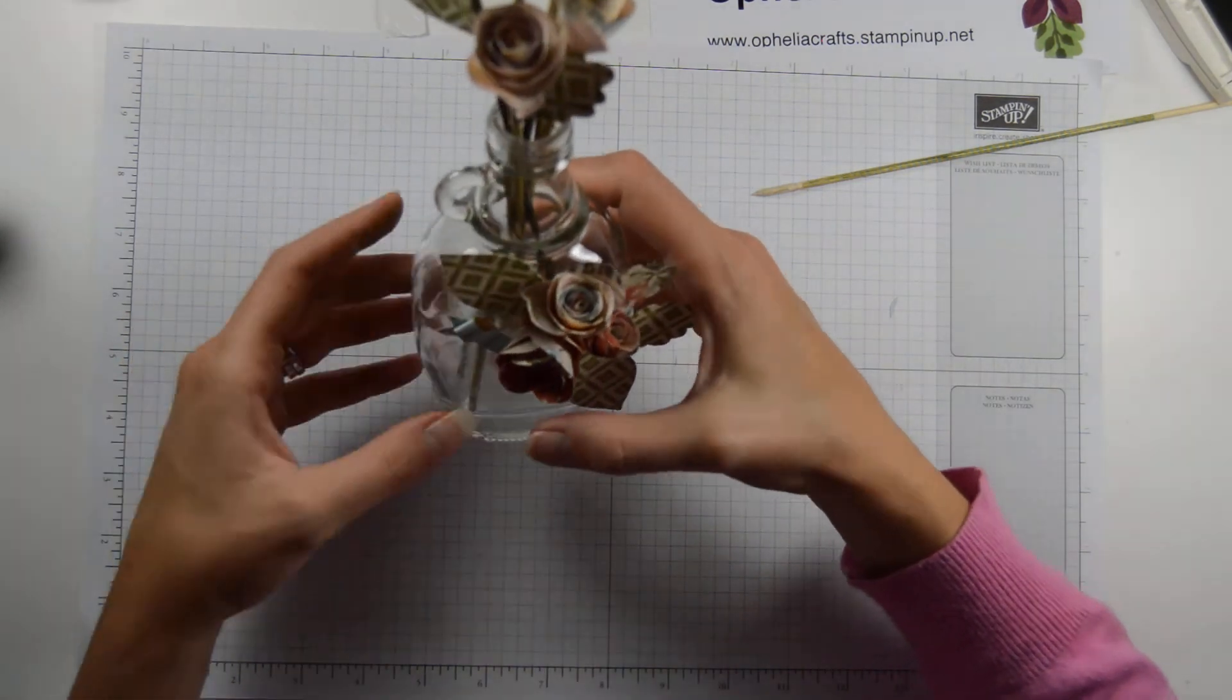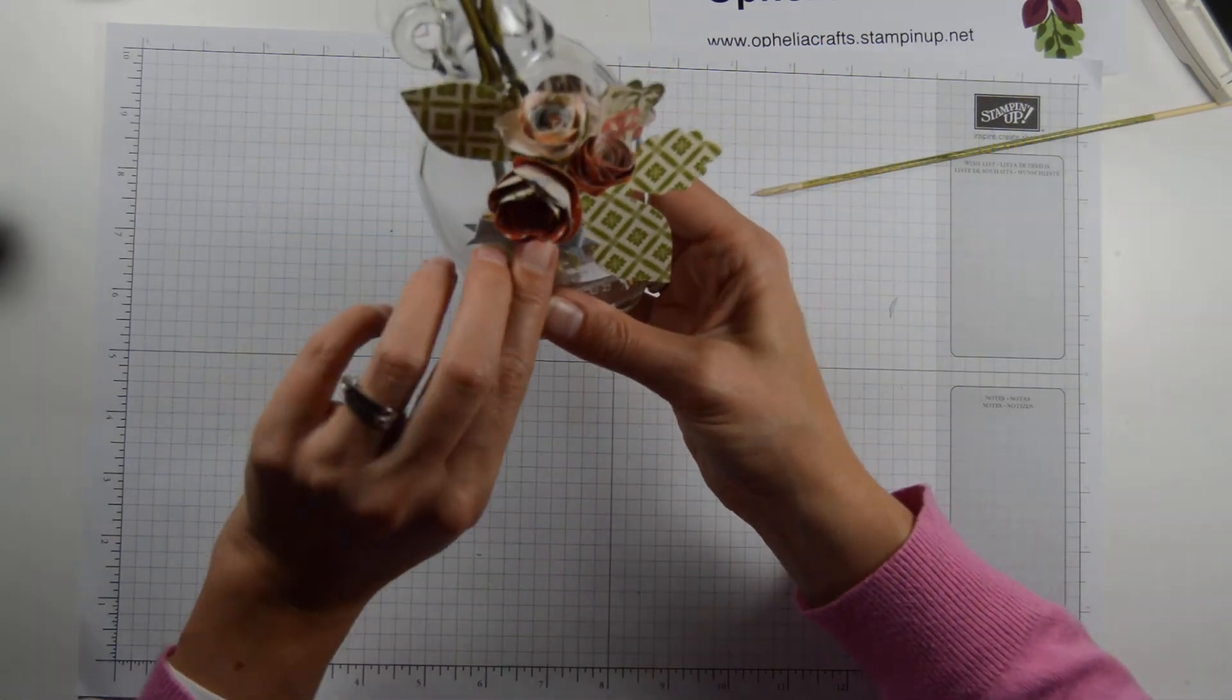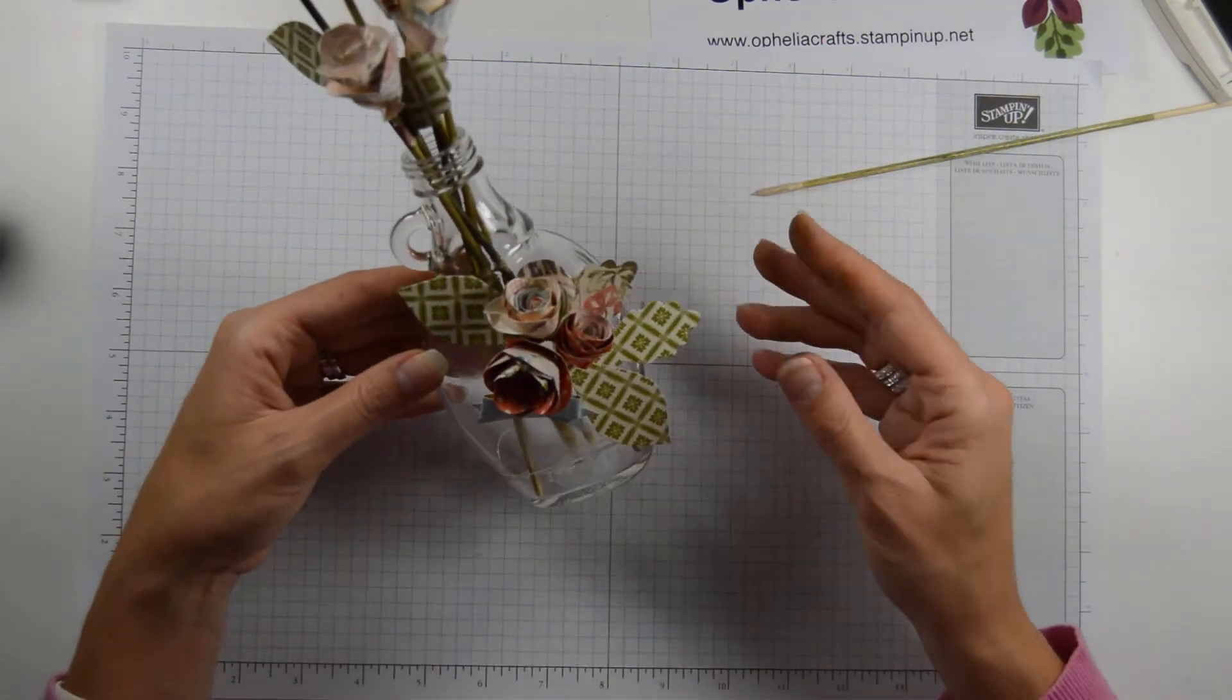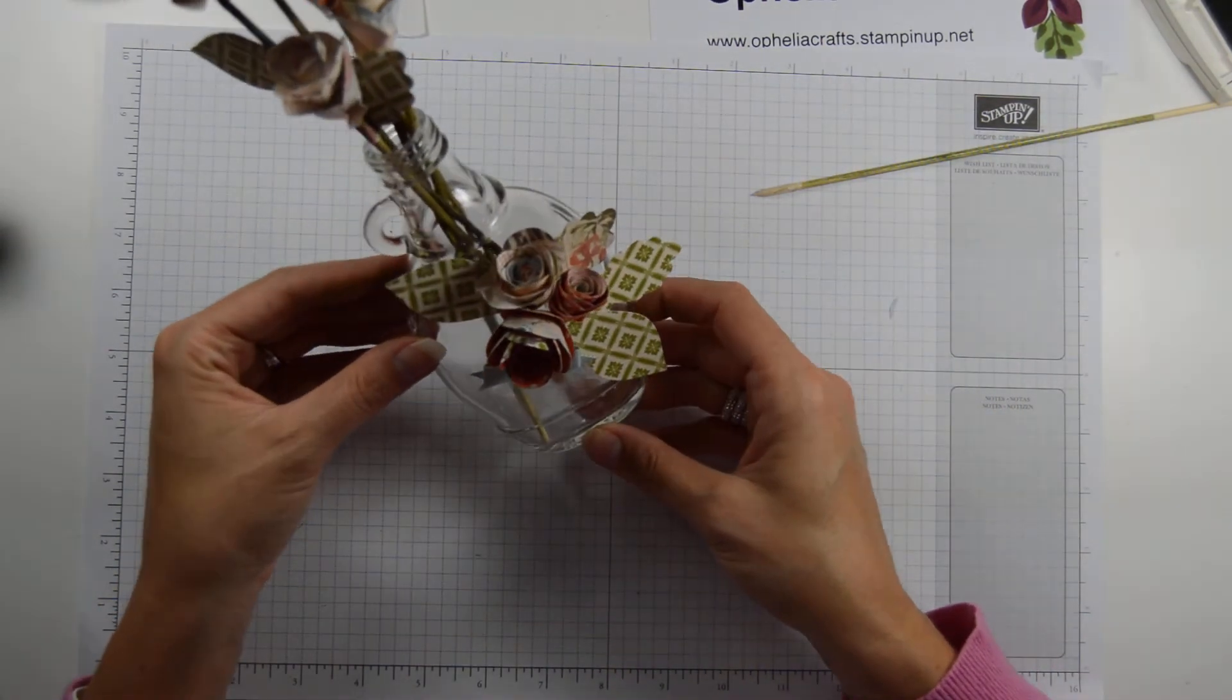And then what I needed it for really was for my third flower on the front here. So there you go. I might have to move my bow a little bit. There we go, so now my centerpiece is finished. I can put it on my desk.